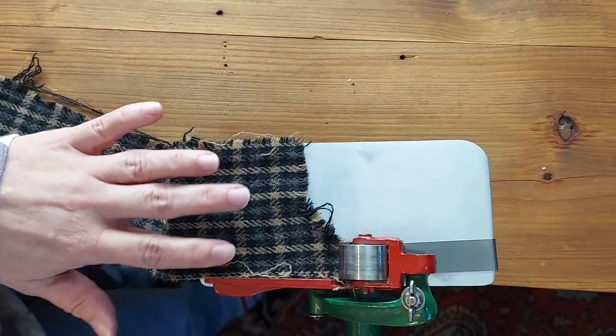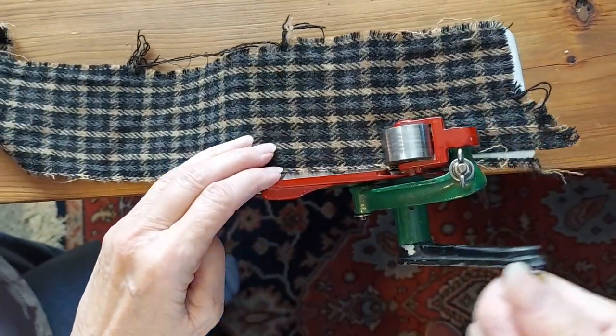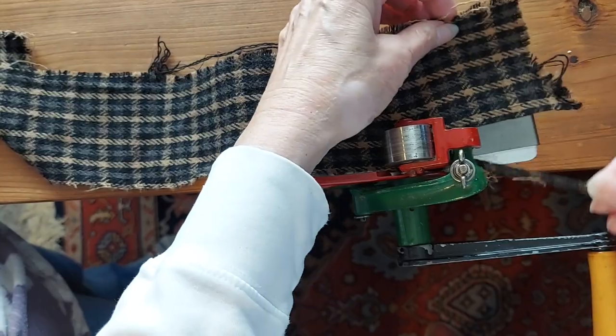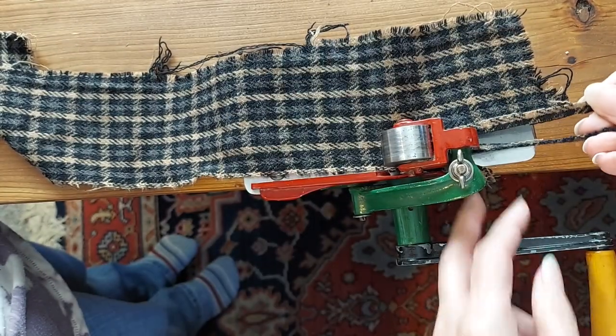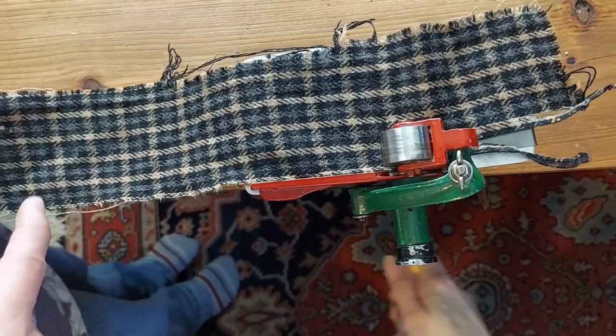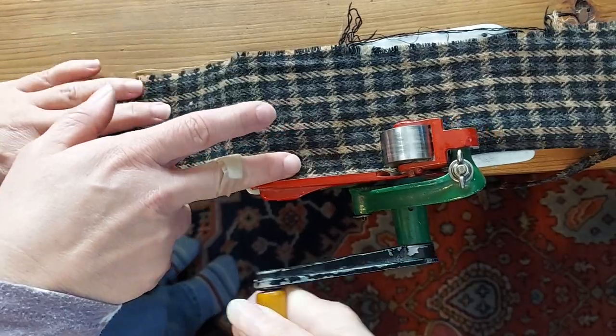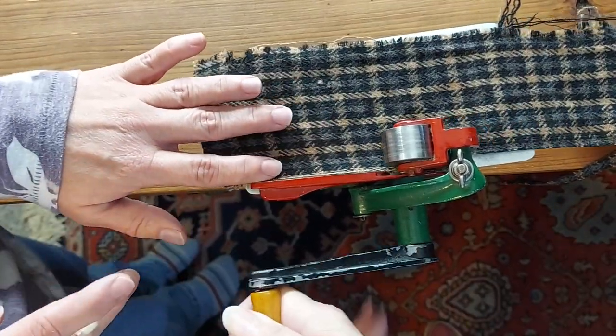And then just turning the handle. It cuts three strips. So as you turn the handle it feeds it through automatically. You just want to make sure that you keep the edge lined up with your edge here.